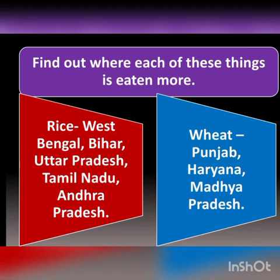Students, in the previous session we learnt that most of our food is made of different things depending on what grows easily at a given place. Different things are eaten at different places. Rice is produced on a large scale in West Bengal, Bihar, Uttar Pradesh, Tamil Nadu, and Andhra Pradesh.